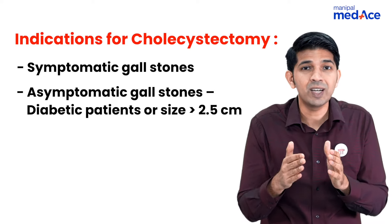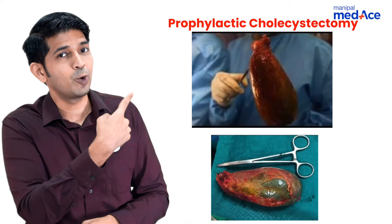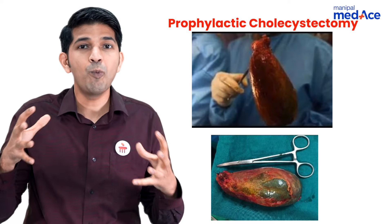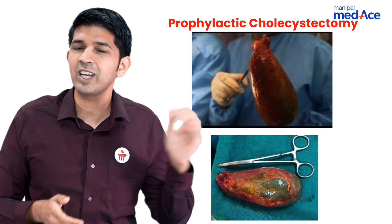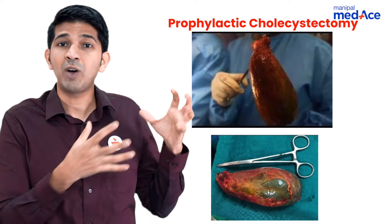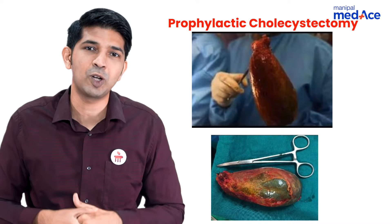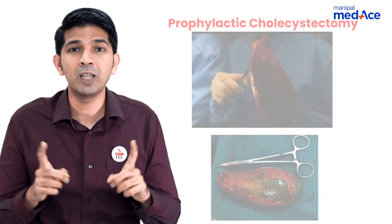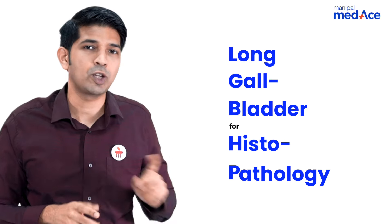There is a separate category of conditions which need what we call prophylactic cholecystectomy. The best way of remembering it is by looking at this image — can you see how big and long this gallbladder is? This is a cholecystectomy we performed recently. After we remove the gallbladder, we send it for histopathological examination. Remember: long gallbladder for histopathology.